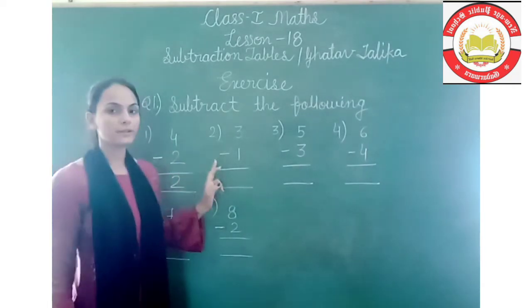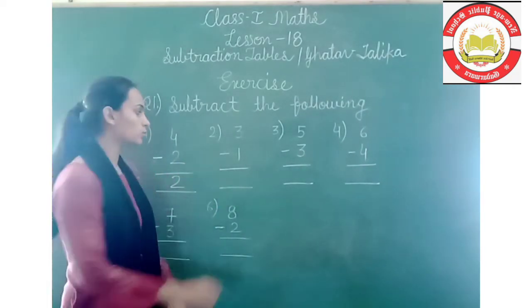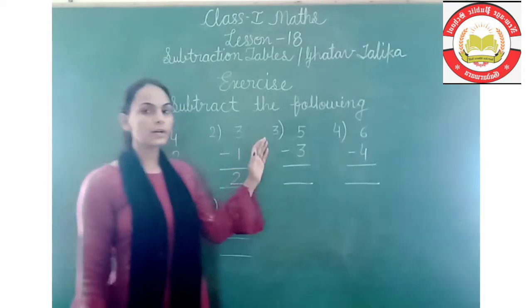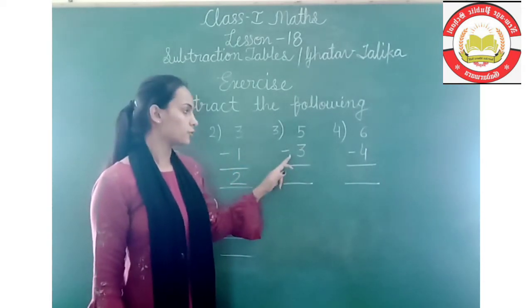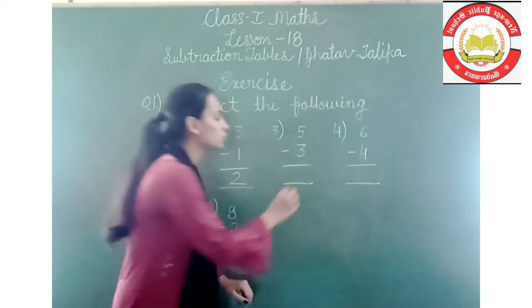Second is 3 minus 1. So 3 minus 1 is equal to 2. Third is 5 minus 3, which is equal to 2.